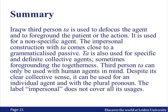In summary for Iraqu: the third-person 'ta' is used to defocus the agent and foreground the patient or the action. It is used for non-specific agents. The impersonal construction with 'ta' comes close to a grammaticalized passive. 'Ta' is also used for specific and definite collective agents, so the typical impersonal properties are certainly not the only ones. Sometimes it foregrounds togetherness. The third-person 'ta' can only be used with human agents in mind. Despite the collective sense, it can be used for an individual agent with a by-phrase, and with a plural pronoun. The label 'impersonal' is certainly not ideal.